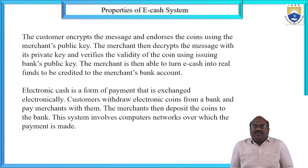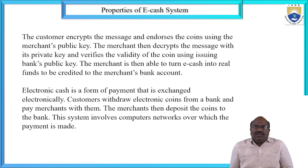The merchant can decrypt the message with the private key and verify the validity of the coins using the issuing bank's key. The merchant is then able to turn e-cash into real coins to be credited to the merchant's bank account. With the help of some generated keys — public key and private key — encryption and decryption are required. The public key is for the sender's security, and with help of these two keys, the coins are verified using the bank's public key. The properties of the e-cash system offer such facilities.